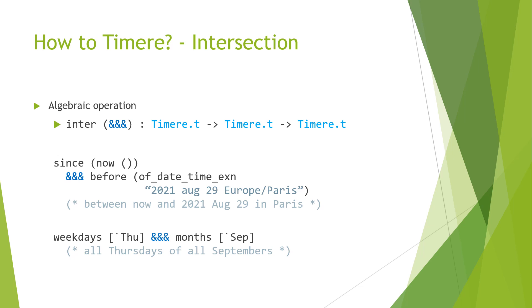Next, we begin to talk about combinators, starting with intersection. This is the same idea as a set intersection — we pick out the common intervals between two expressions. In our first example, we specify the time from now to the end of the domain, end of year 999, and intersect that with the time before a particular datetime in Paris. Combining the two, we have specified a range. In the next example, we pick out all the Thursdays and all the Septembers, and by intersecting, we are asking Timore to pick out all Thursdays in all the Septembers.